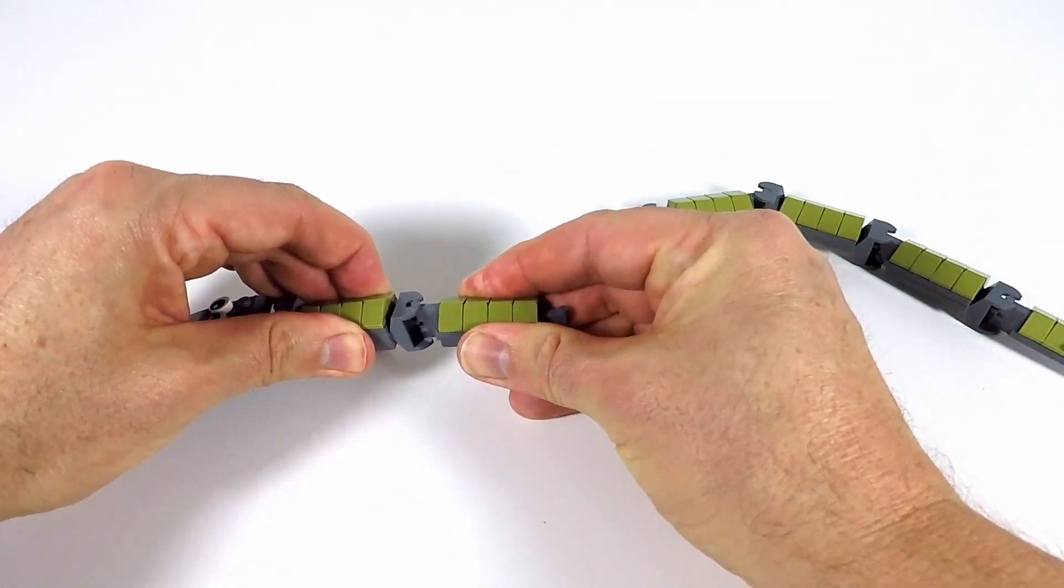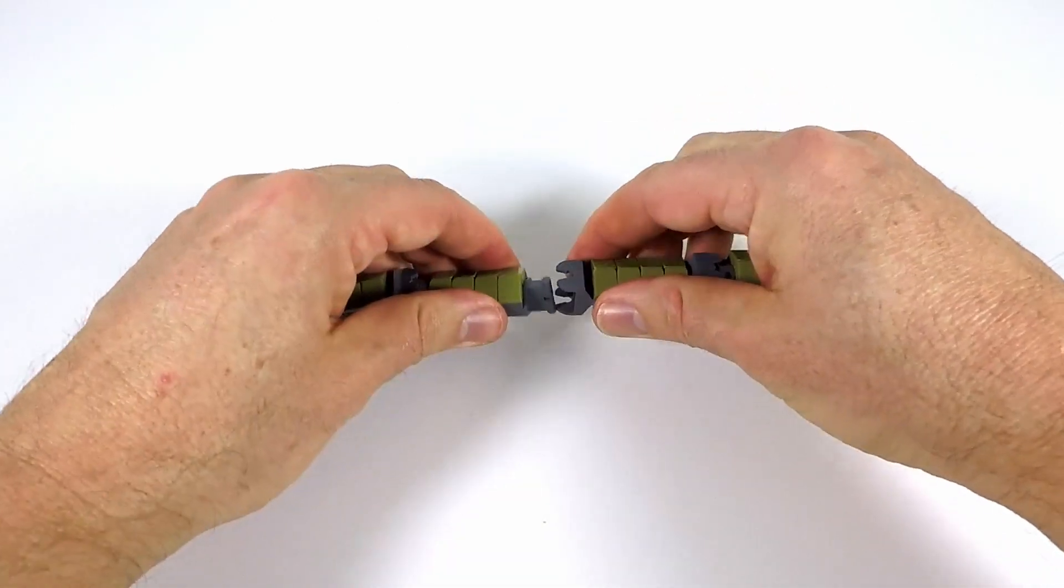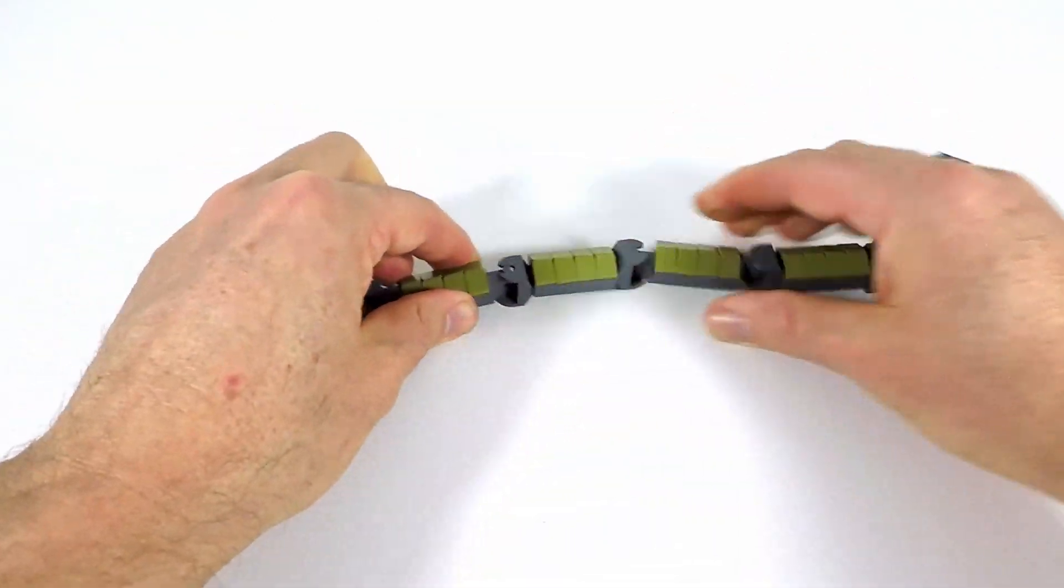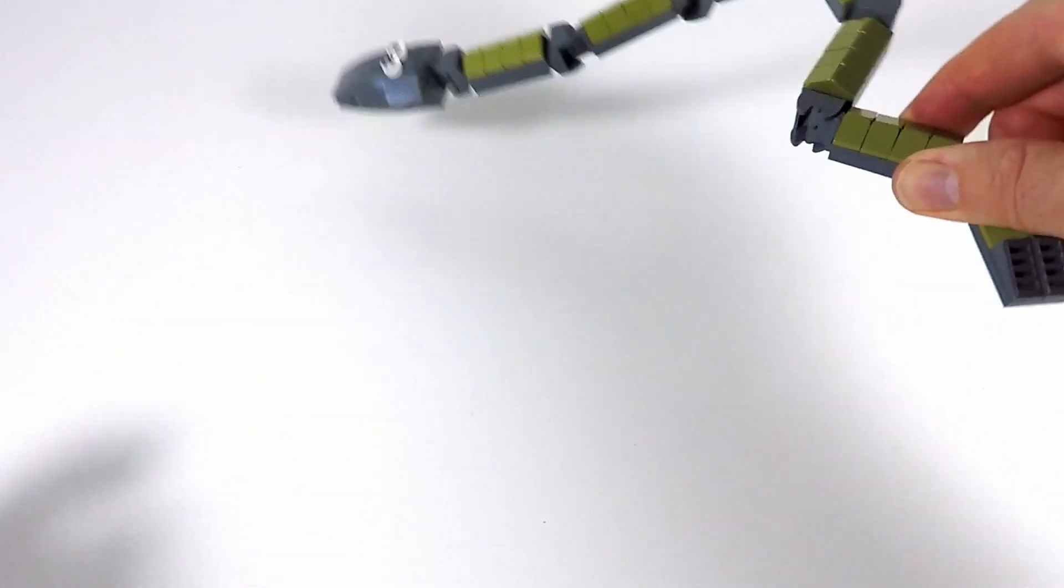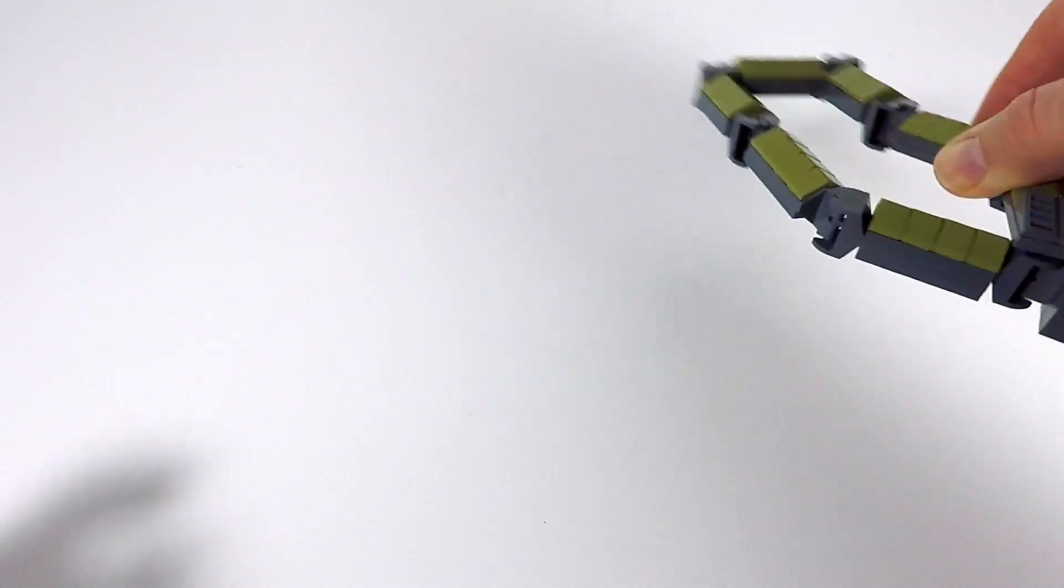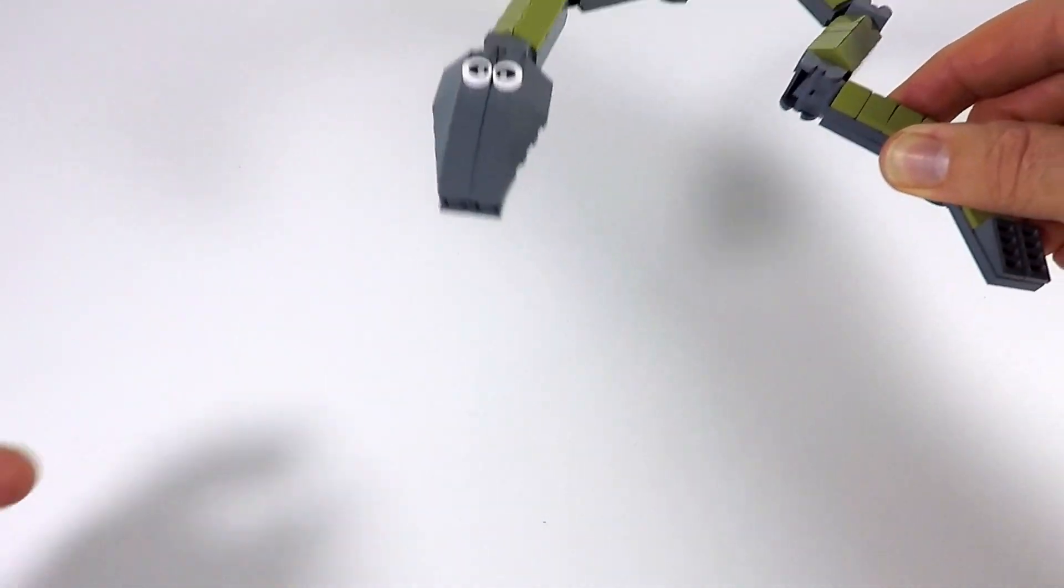So we'll pop this back on now. And this one back on. And you can make the snake as long as you like. It just depends on how much you can hold and how much movement you really want. Now let's have a look at the head.